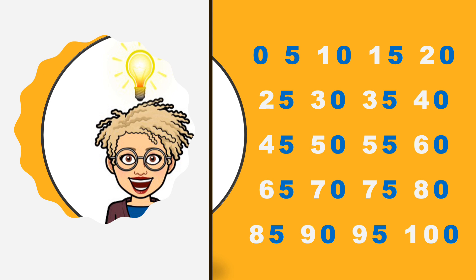I want you to pay close attention to the numbers that are counting in fives. Did you notice anything about the numbers? If you pay very close attention to the ones place, you'll realize that every number that counts in fives either has a zero or a five in the ones place. I want you to lock that into your memory bank because that's going to come in handy a little later.